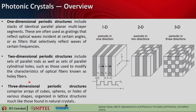For 3D periodic crystals, you can have a 3D array of cubes, spheres, or holes of different shapes. The important thing is that they should be organized in lattice structures, much like those found in natural crystals. This is how 1D, 2D, and 3D photonic crystals look like.